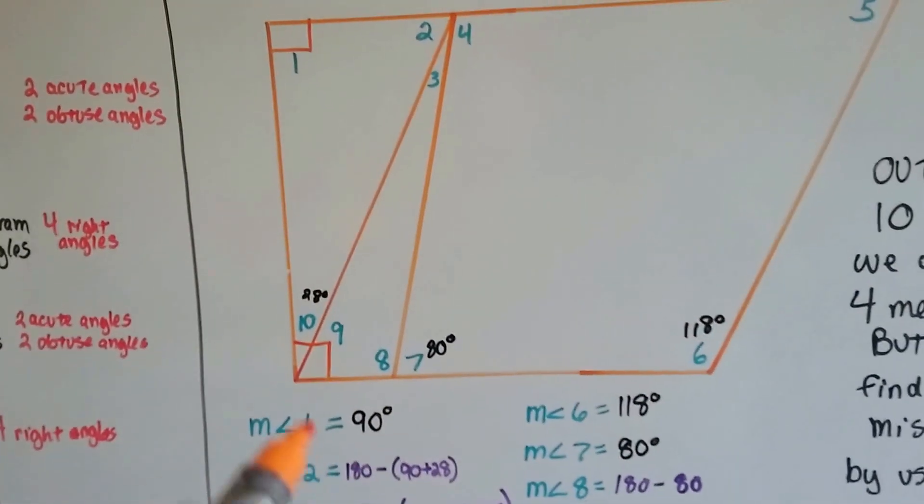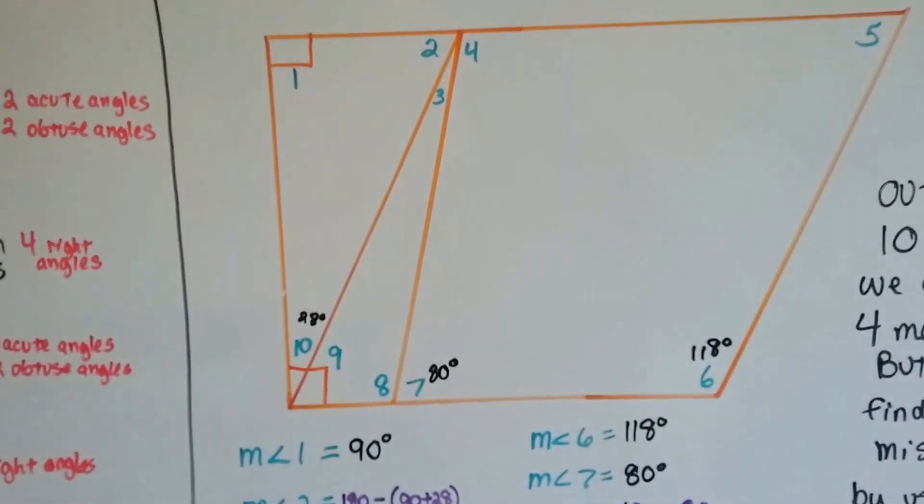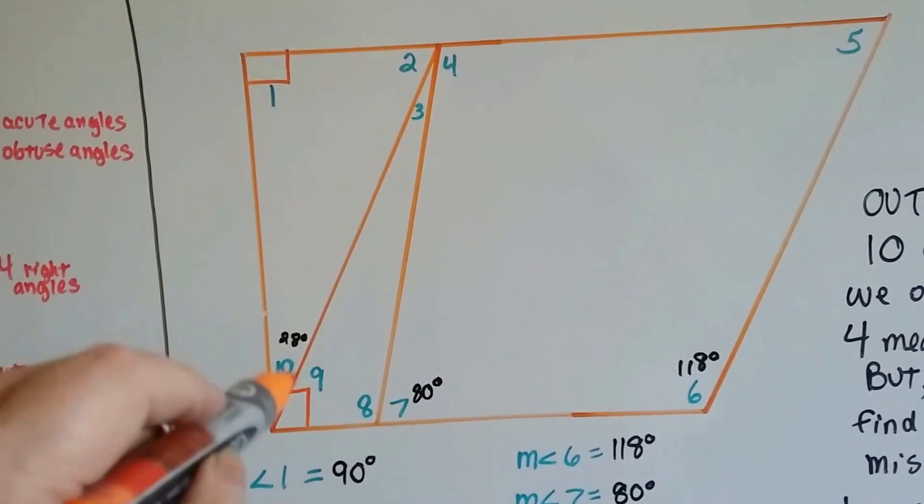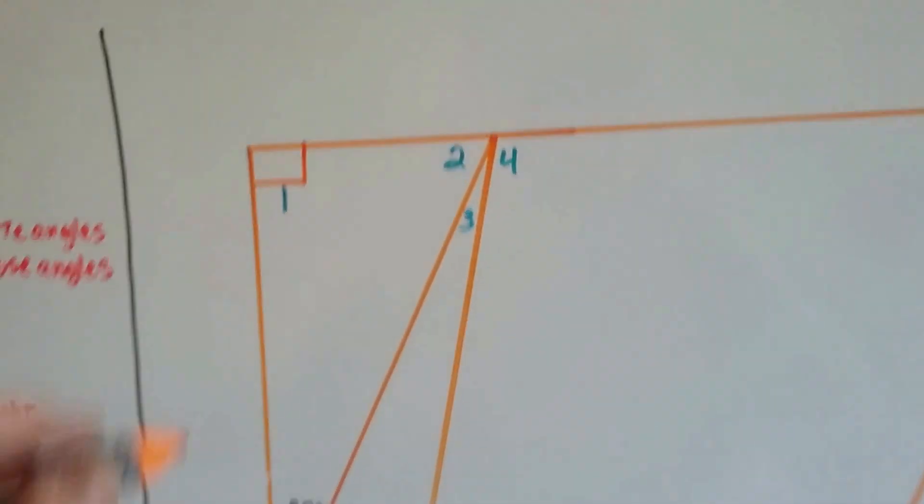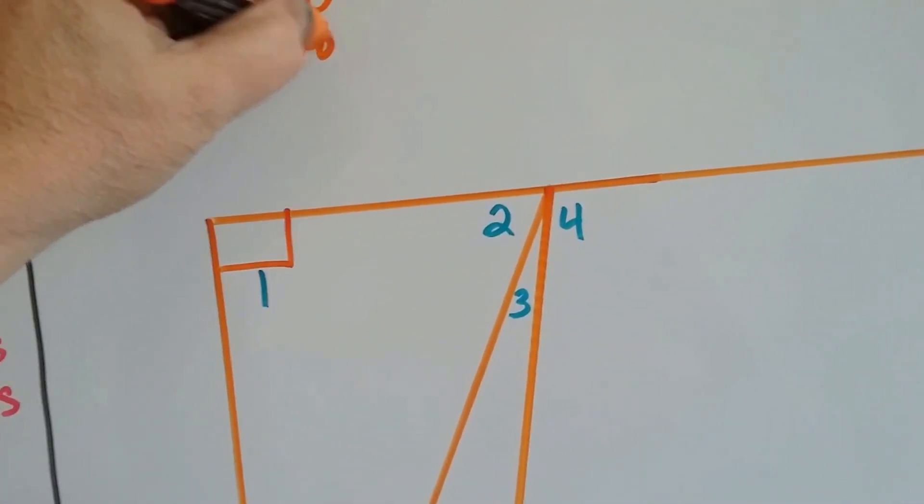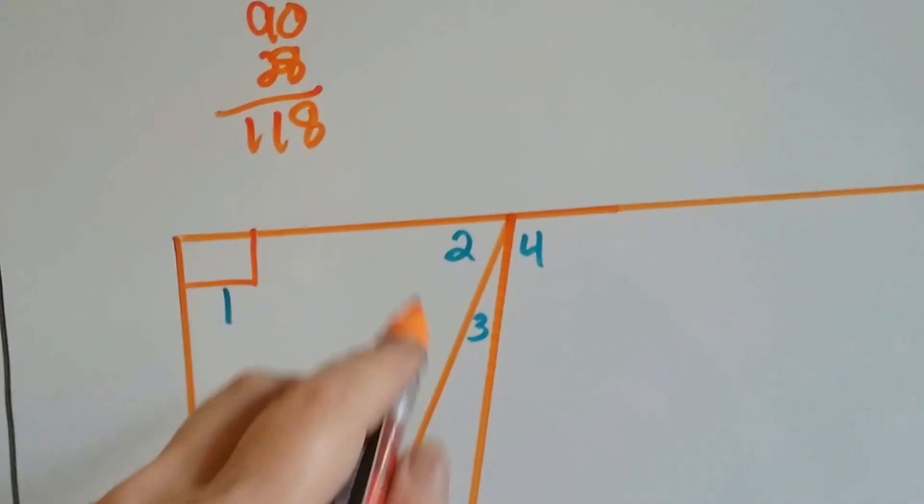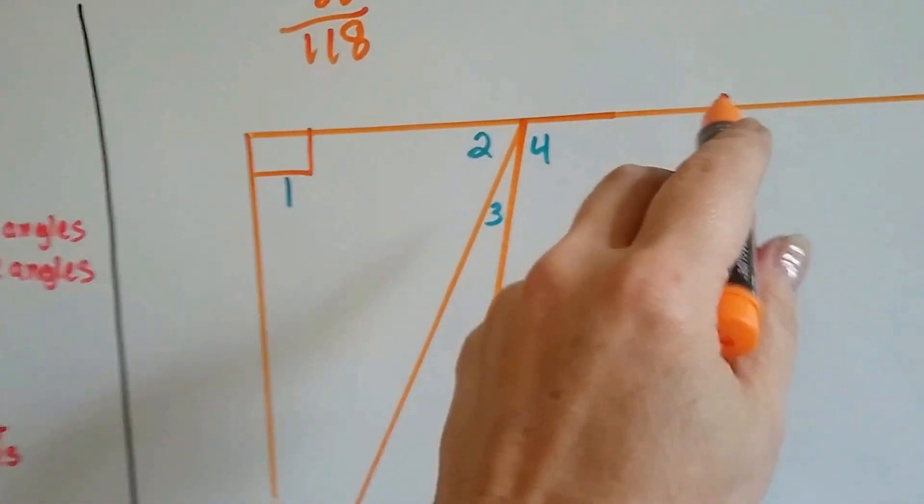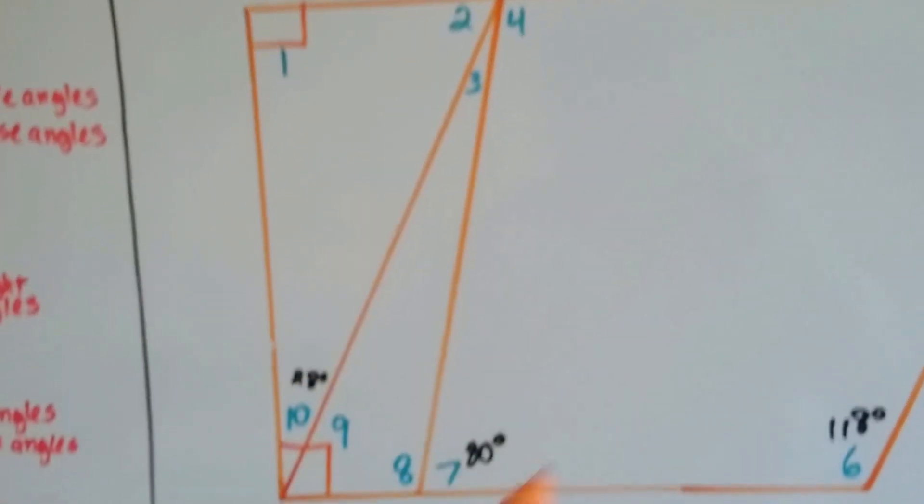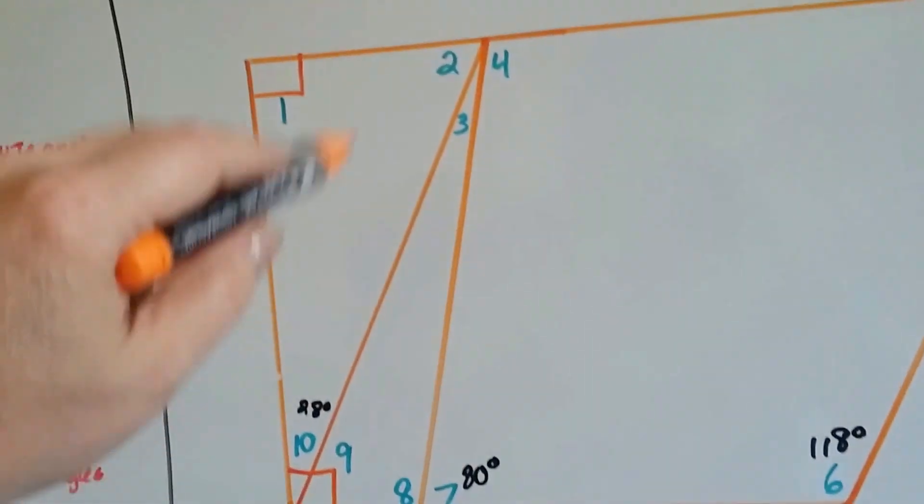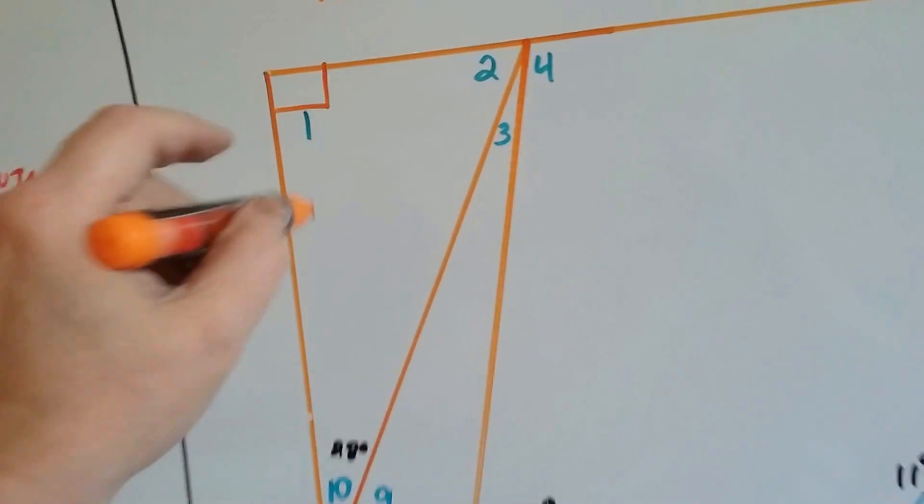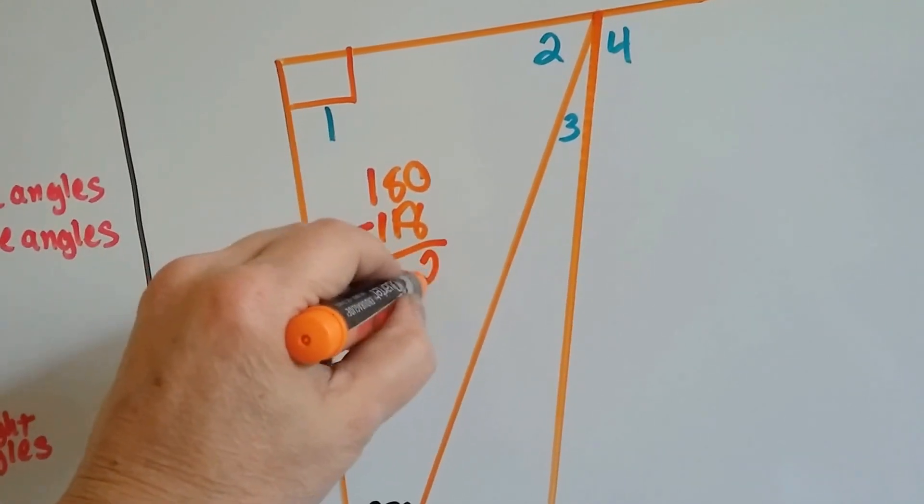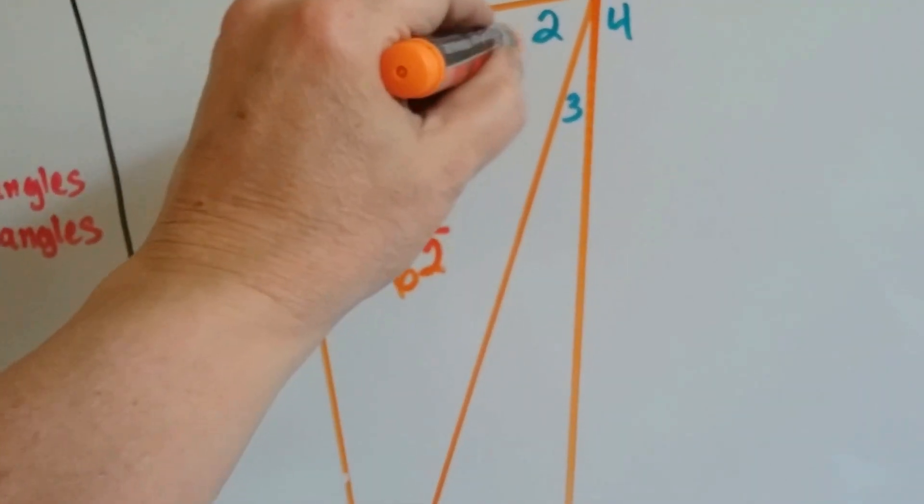So to find the measure for the rest of them, we have to do a little detective work. If we know this is 90 and that's 28, then we can find the measure of angle 2. 90 and 28 is 118. And we know that this is a straight line here, so we're going to use that afterwards to find these. So out of 118, we need to subtract that from 180, and we'll have the measure of angle 2. The measure of angle 2 is 62 degrees.